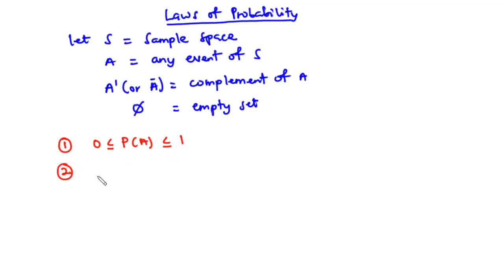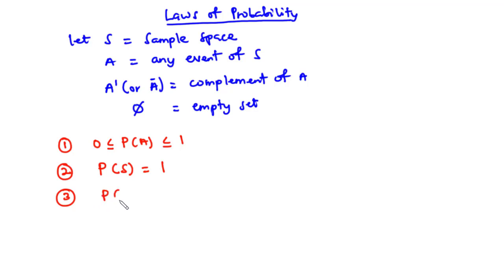For Law 2: the probability of the sample space occurring is equal to 1. Intuitively, when an experiment is performed, exactly one of the elements in the sample space will happen, so P(S) = 1. For Law 3: the probability of the empty set is equal to 0. In the empty set we have nothing inside, which means the number of ways that this set can occur is 0. So 0 divided by the sample space is still 0, and the probability of the empty set equals 0.